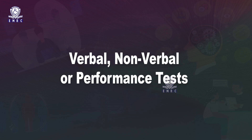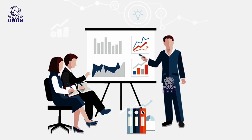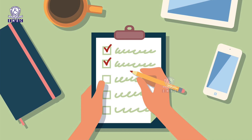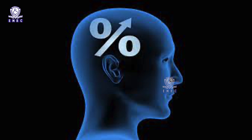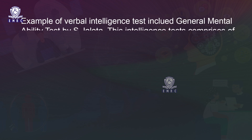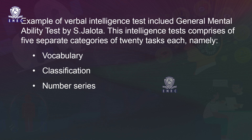Verbal tests require subjects to give verbal responses either orally or in written form and can only be administered to literate people. The subject is required to use language while attempting the test items. An example is the General Mental Ability Test by S. Jalota, which comprises five categories of 20 tasks each — vocabulary, classification, number series, analysis, and reasoning.